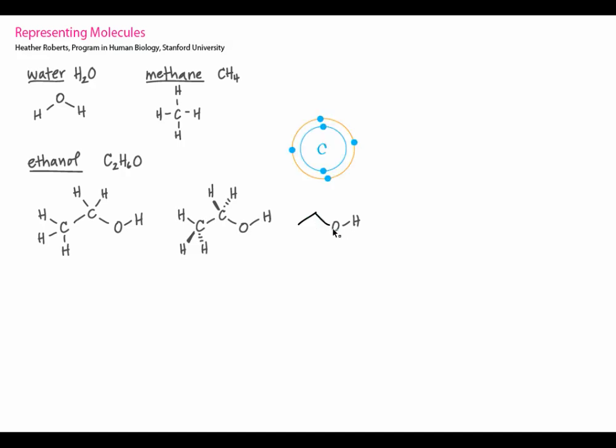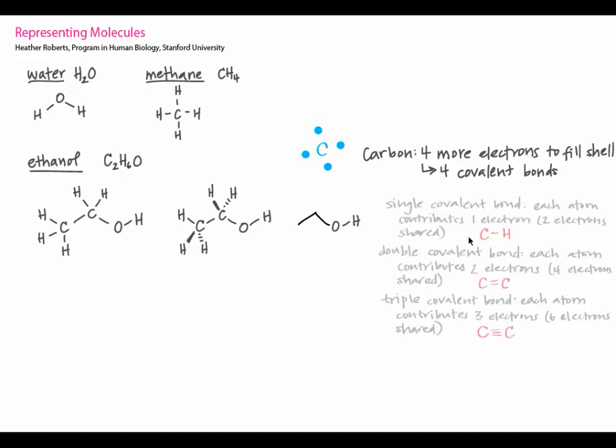Remember that carbon has four electrons in its valence electron shell, so carbon needs four more electrons to have a full valence shell. Here's the Lewis dot structure of carbon. Carbon can get those electrons by sharing electrons with other atoms, which forms covalent bonds. Remember that a single covalent bond is formed when each atom shares one of its own electrons, and this would provide carbon with one more electron that counts toward its valence shell.